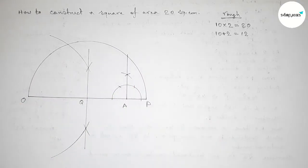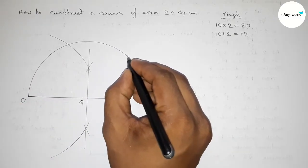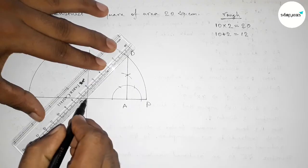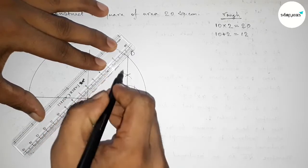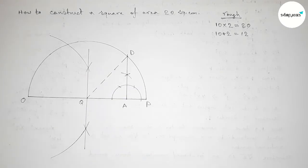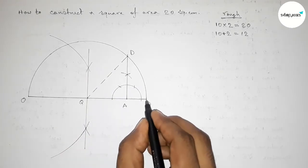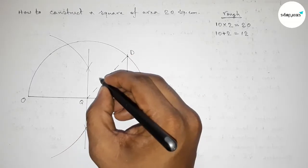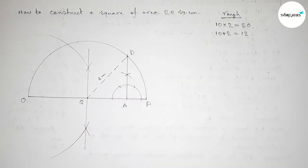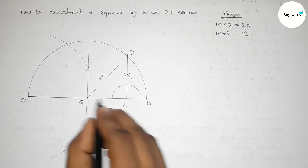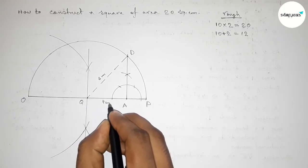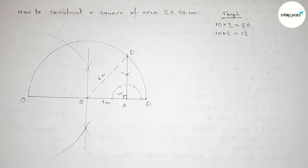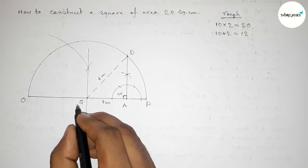The perpendicular meets the semicircle at a point — taking that point as D. Joining Q and D: QD and QP are both radii of the semicircle, each equal to 6 centimeters. QA equals 4 centimeters, and this is obviously a right angle triangle, so the angle at A is 90 degrees.